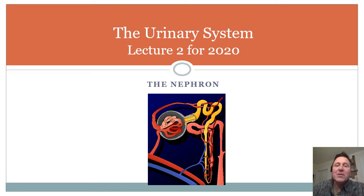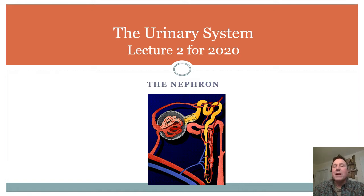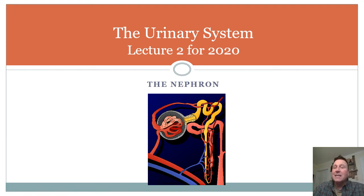Hello class! Here is our second urinary system lecture — a continuation looking at the anatomy. The last one covered gross anatomy of the kidney. Now we're getting into the microscopic part: the nephron, the tubes, and some kidney diseases. The next lecture covers kidney function — how the kidneys do what they do.